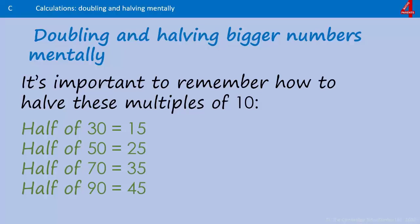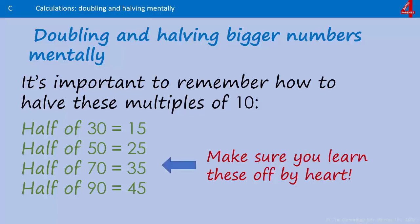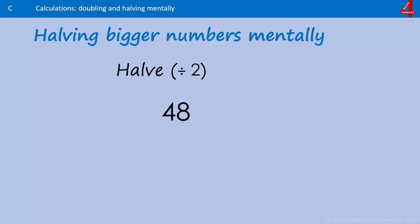It's really important to make sure you know how to halve the multiples of 10: 30, 50, 70, and 90. If you don't know these, learn them now. They'll be a massive help. There are some numbers that are mentally easy to halve. 48: you're just halving the 4 and halving the 8, and that's really simple to do.